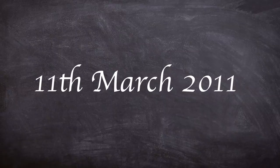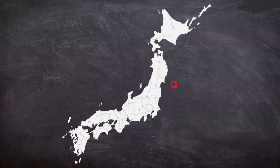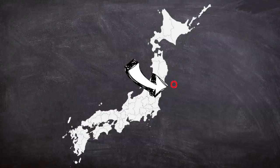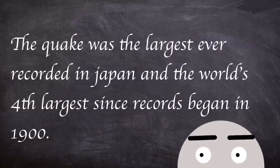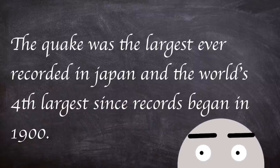On the 11th of March at 14.46 local time, an earthquake of a magnitude of nine lasted for two minutes. It was caused by a sudden release of energy at the interface where the Pacific tectonic plate forces its way under the North American plate. The earthquake was the largest ever recorded in Japan and the world's fourth largest since records began in 1900.